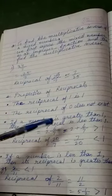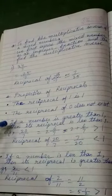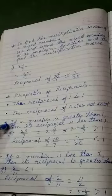Next is, if a number is greater than 1, then its reciprocal is less than 1.